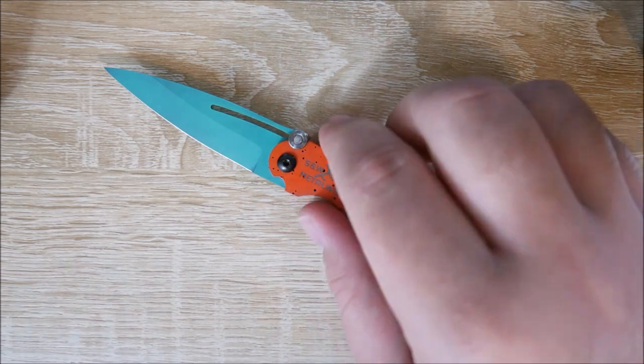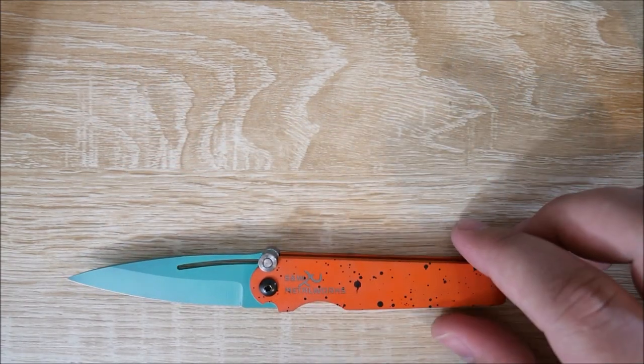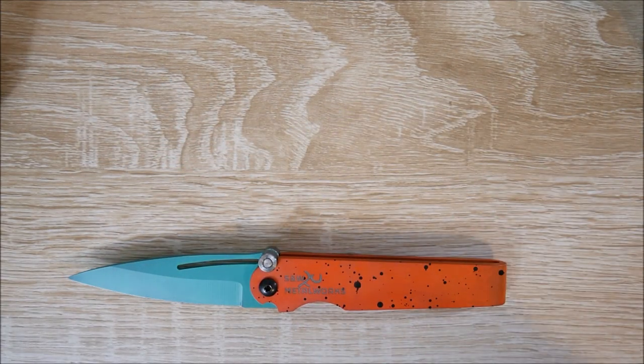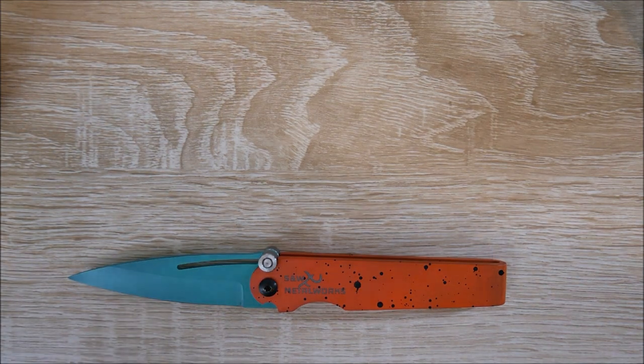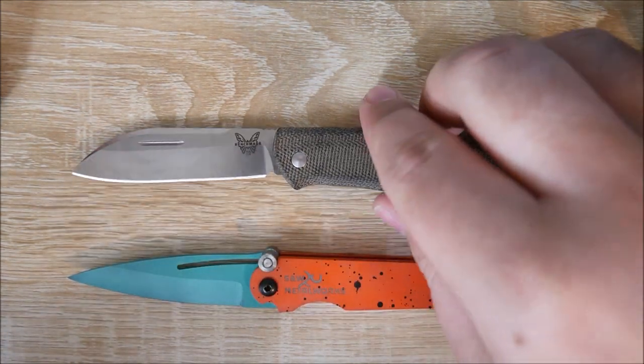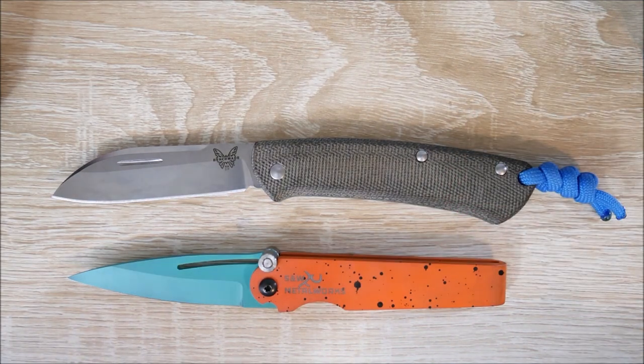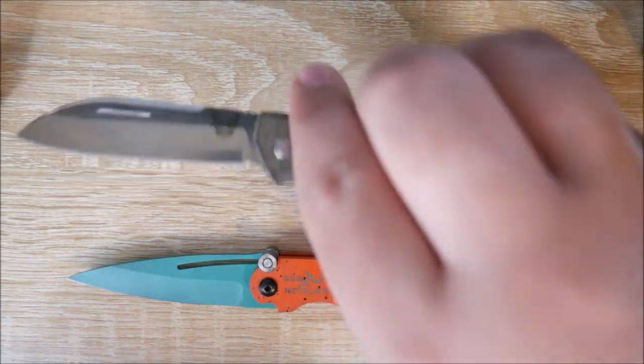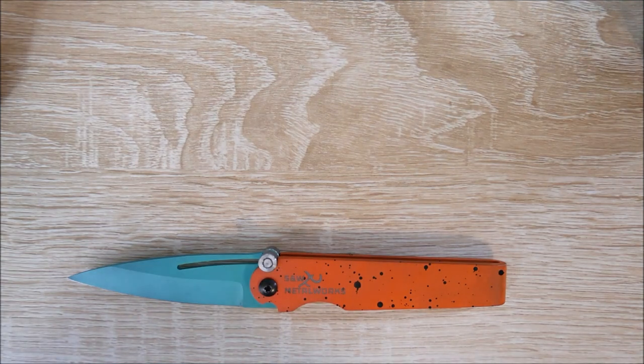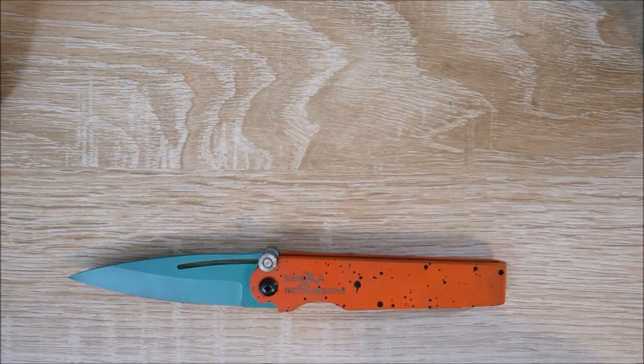Let's go ahead and do a quick size comparison here. We have the SNW Metalworks go-to slip joint, and we have my other favorite slip joint, which is still my favorite slip joint, the Benchmade Proper. So the Proper is a little bit longer, a little bit wider, about the same thickness actually. If you like the size of the Proper, keep that in mind.